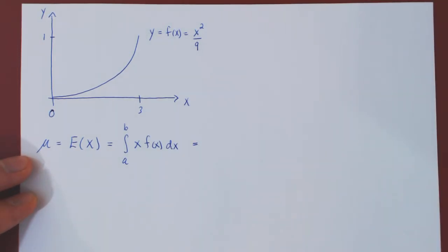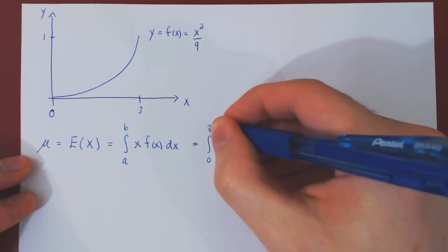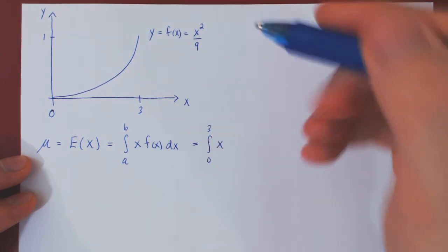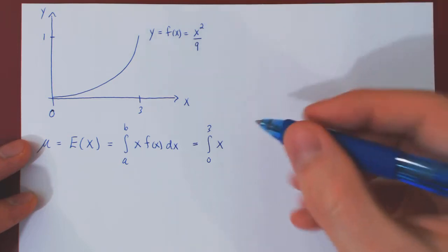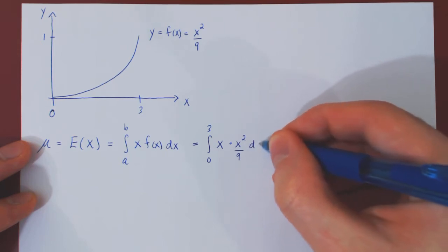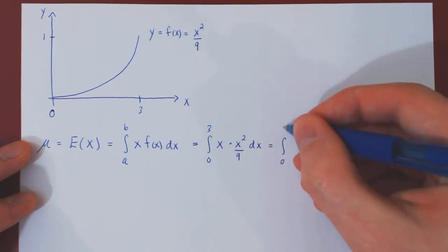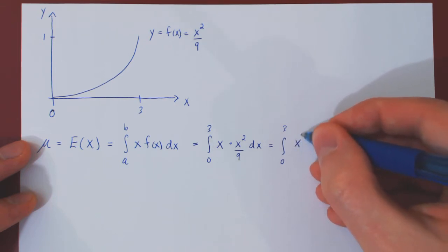We can now substitute in this special case: a is 0, b is 3, x is x, and the density function is x squared over 9. We can multiply x with x squared, and we have x cubed over 9 dx.